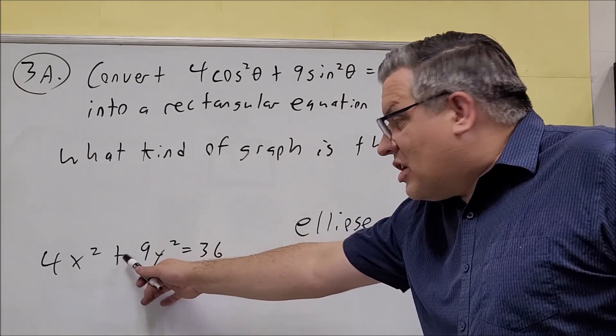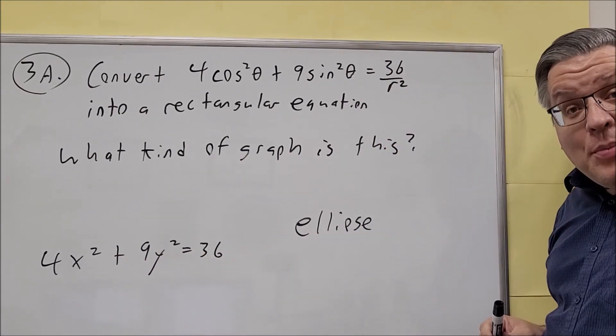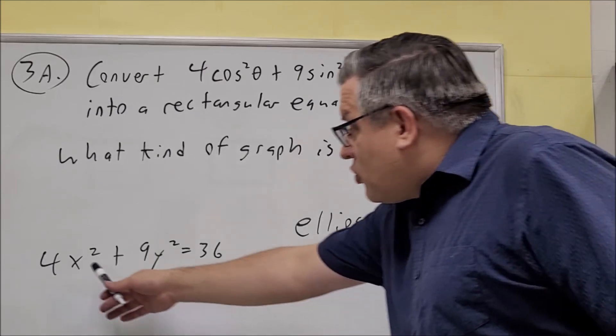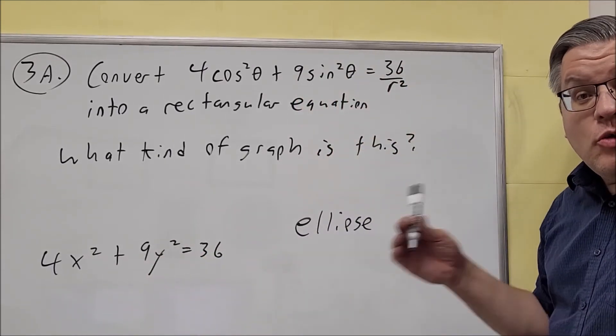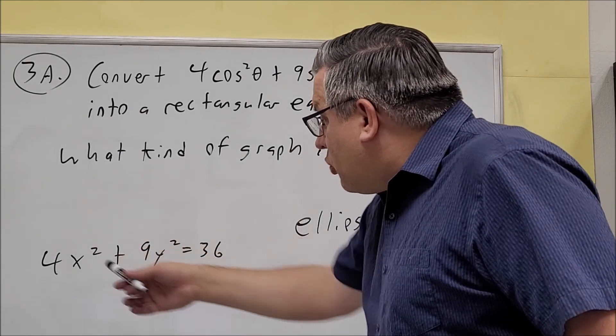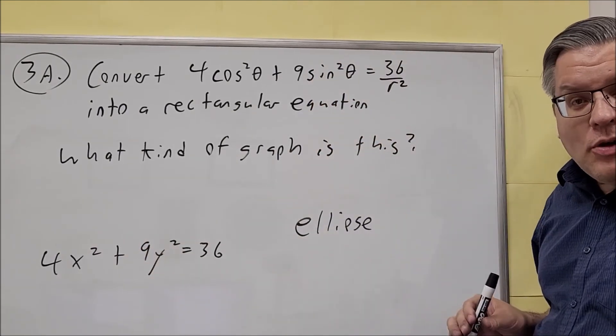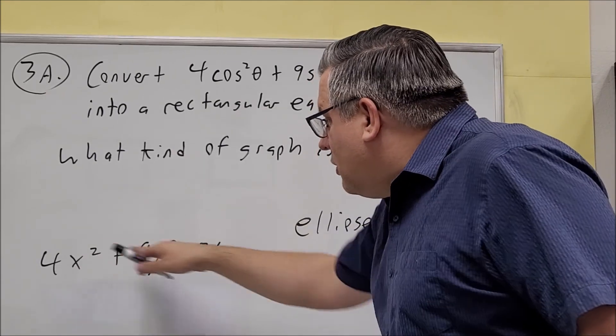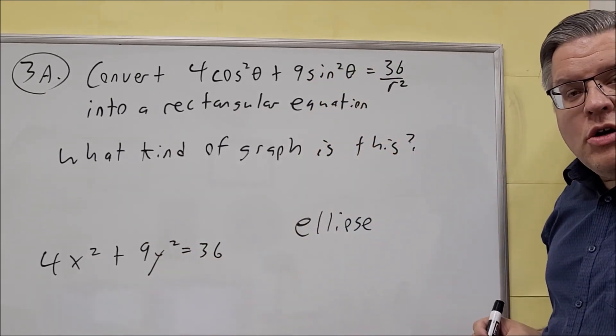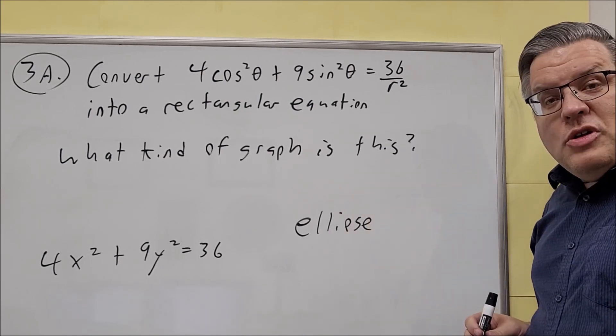Now if that was a minus sign I would have a hyperbola. If this was a 4 and that was a 4, if both those coefficients were the same, then you would have a circle. And then if one of them squared and one of them is not, you'd have a parabola. So different rules that you want to take a look at depending on the coefficients and whether the x and the y are both going to be squared.